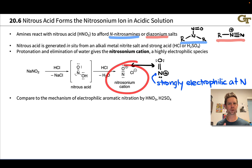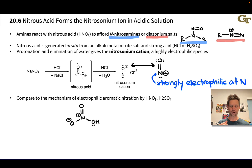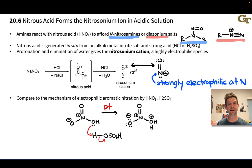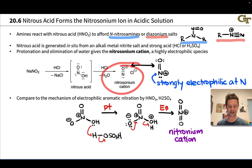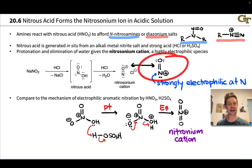To understand where this cation comes from, consider electrophilic aromatic nitration, where an analogous cation was generated from nitric acid. Recall that when we mix nitric acid and sulfuric acid in high concentration, sulfuric acid protonates nitric acid, creating an H2O+ that departs as a leaving group, generating a nitronium cation — essentially the nitrosonium cation with an additional oxygen atom. The mechanism of formation of the nitrosonium cation is exactly analogous to the mechanism of formation of the nitronium cation. In both cases, that nitrogen is a fantastic electrophile.